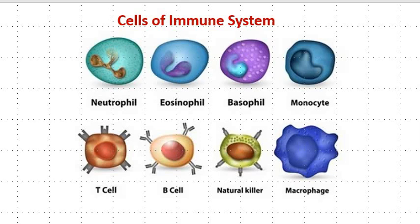Natural killer cells are lymphocytes in the same family as T cells and B cells. They were first noticed for their ability to kill tumor cells without any prior activation, which is why they are named natural killer cells. Additionally, natural killer cells secrete cytokines which act on other immune cells like macrophages.